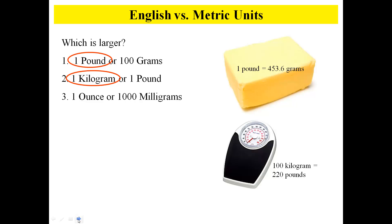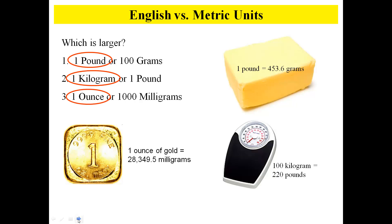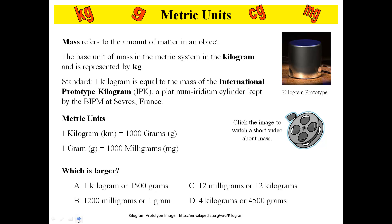The next one is one ounce or 100 milligrams. One ounce of gold is about 28,350 milligrams. From there, let's take a look at the metric units.